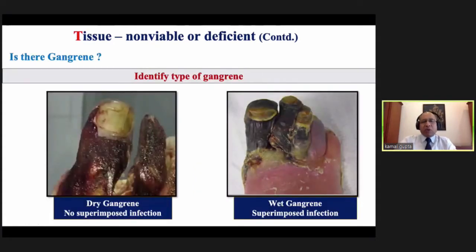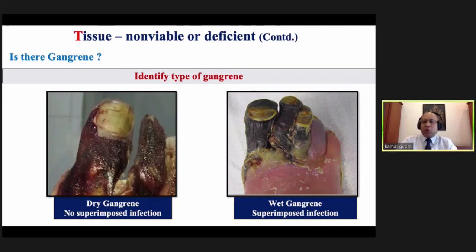Another thing to assess is when a patient comes with gangrene — whether it is dry or wet gangrene. The basic difference is: if gangrene is wet, it means there is superimposed infection. So we have to manage the gangrenous tissue, the slough present, and at the same time address the infection.